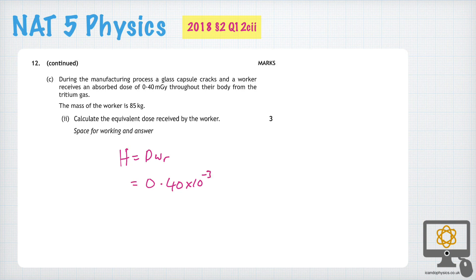And the radiation weighting factor, we have to look that up. We're told in the question that the tritium lamp uses beta particles.